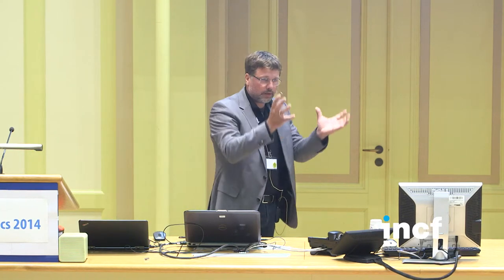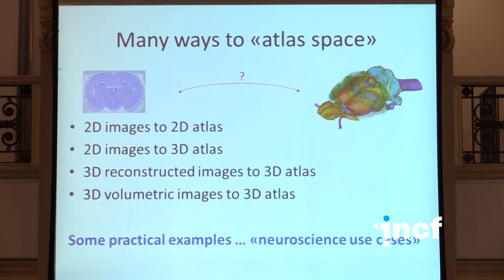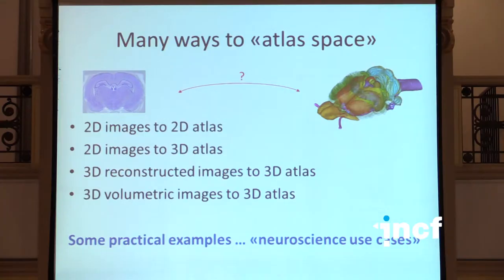We have several useful volumetric 3D atlases, so how should one go from a collection of images to atlas space? There are many ways to do it, and I'll quickly review some examples to give you neuroscience use cases, because the method you choose depends on the tools you have, the needs you have, and some of the registration methods available require significant expertise.